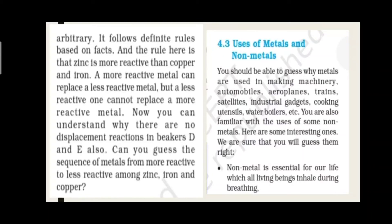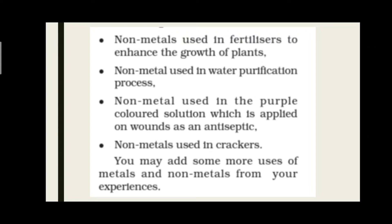Uses of Metals and Non-Metals: जो भी machinery parts होते हैं जैसे automobile, aeroplane, train, satellite, industrial gadgets, cooking utensils, water boilers - वो सब metals से बनते हैं। Non-metals भी हमारी life में required और essential हैं। जैसे Oxygen non-metal है जिसका use respiration में होता है। Nitrogen, Sulphur, Phosphorus जैसे non-metals का use fertilizers बनाने में होता है।